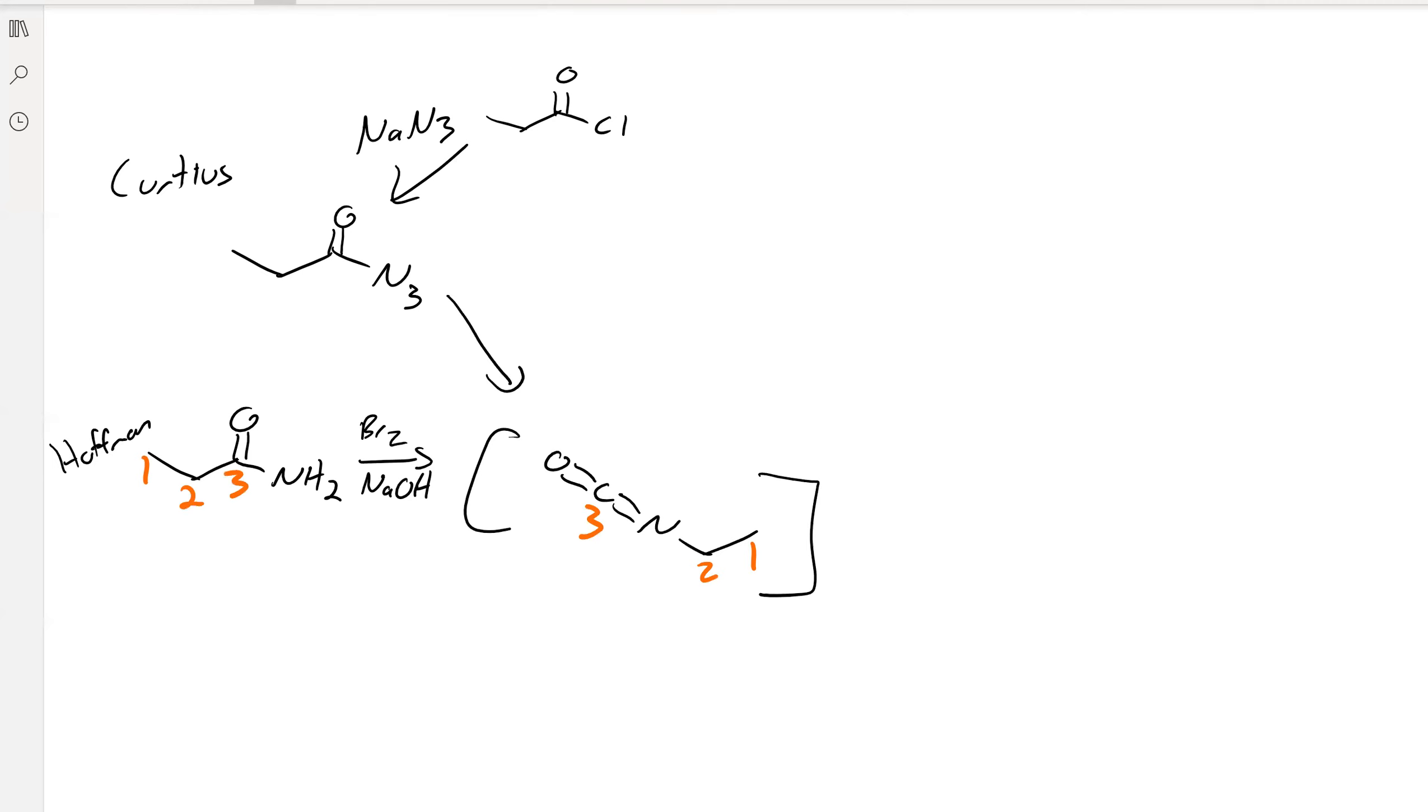The azide will also go to this isocyanate just upon the application of heat. And then once you've got this isocyanate, you can just add some water and you're going to lose carbon dioxide.